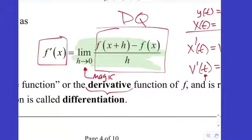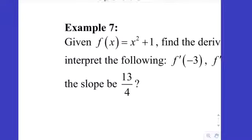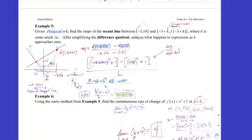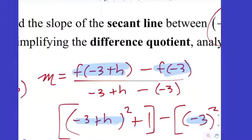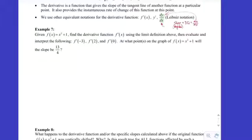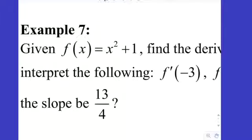This is the limit definition of the derivative, and it works for any function. Sticking with example 7, instead of setting up the difference quotient each time for a specific x value like negative 3 or 2, we let x represent a random x value and treat it like a constant all the way through. On the back end, after we evaluate the limit, we let it be a variable again.